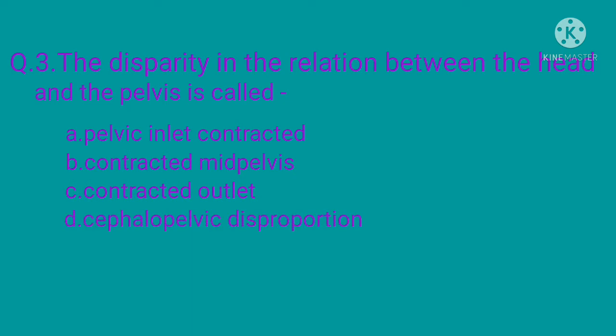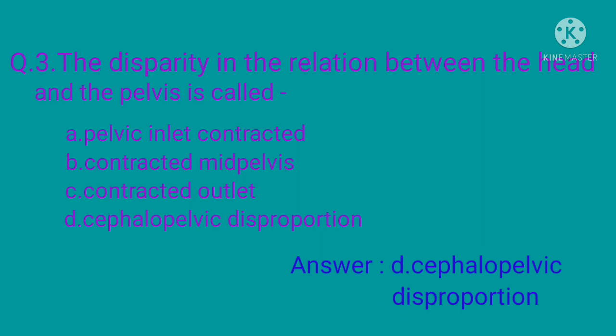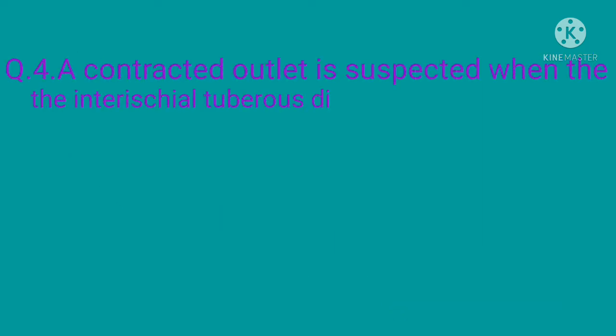Question 3: The disparity in the relation between the head and the pelvis is called — option A: pelvic inlet contracted, option B: contracted mid-pelvis, option C: contracted outlet, option D: cephalopelvic disproportion. The correct option is option D: cephalopelvic disproportion.